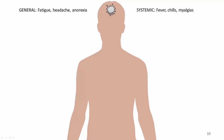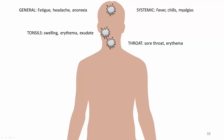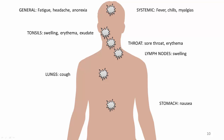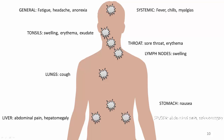Systemic symptoms include fever, chills, and body aches. Swelling, erythema, and exudate or white patches in the tonsils. Sore throat and erythema in the throat. Lymphadenopathy. Cough. Nausea. In some instances there can be enlargement of the liver, although a more common etiology of abdominal pain is due to enlargement of the spleen as a major lymphoid organ.